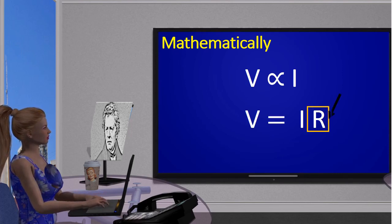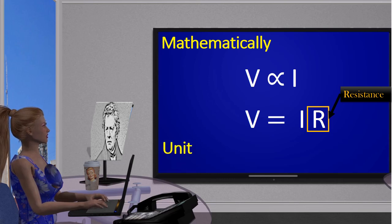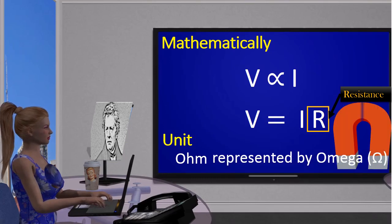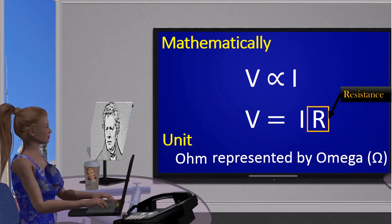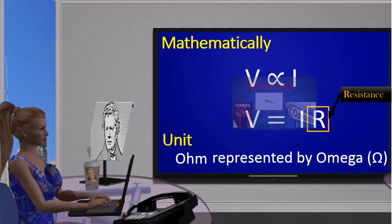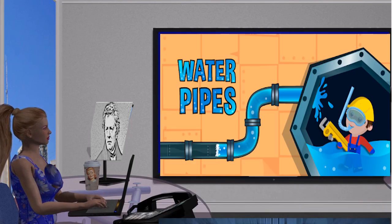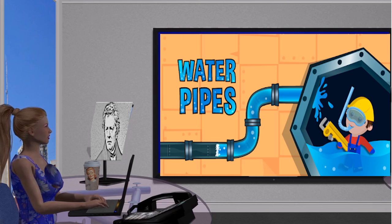It has a unit of ohm, named after the scientist Ohm. It is represented by the Greek letter omega and looks like an inverted horseshoe. To understand resistance deeply, go check my video on resistance and everything about resistance will be cleared to you. Now we will understand Ohm's Law by water pipe analogy.